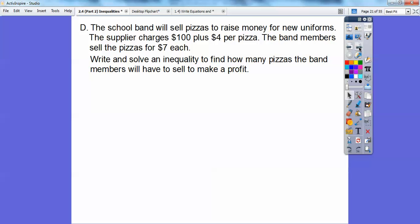The school band will sell pizzas to raise money for new uniforms. Pizza sounds good right now. The supplier charges $100 plus $4 per pizza. The band members sell pizza for $7 each. Write and solve an inequality to find how many pizzas they'll have to sell to make a profit. It's going to be $100 plus $4 per pizza, P being the number of pizzas. We want that to be less than the $7 pizzas.